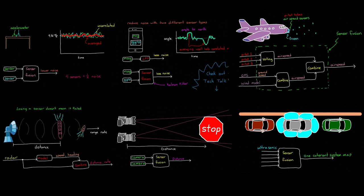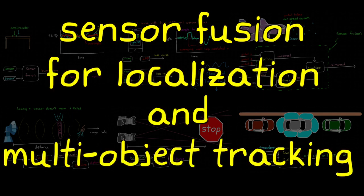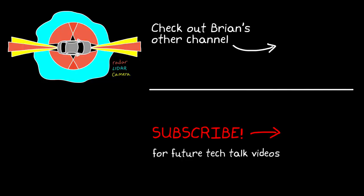In the next two videos, we're going to go into more detail on sensor fusion for localization and for multi-object tracking. In the next video in particular, we're going to show how we can combine an accelerometer, magnetometer, and a gyro to estimate orientation. So if you don't want to miss that and future Tech Talk videos, don't forget to subscribe to this channel.